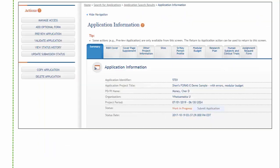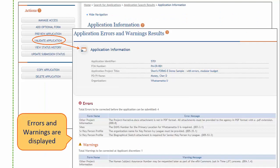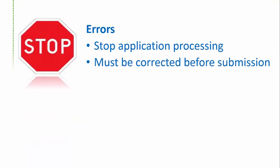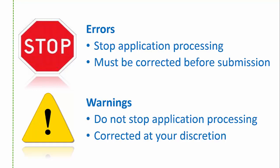Once you have completed the forms, use the Validate Application action to check your application data against NIH business rules to identify errors and warnings. You need to correct all errors prior to submission — ASSIST will not let you submit until all errors are cleared. Review all identified warnings and, based on your circumstances, decide if any action needs to be taken. Warnings do not prevent application submission, but they are there for a reason, so take some time to consider them.